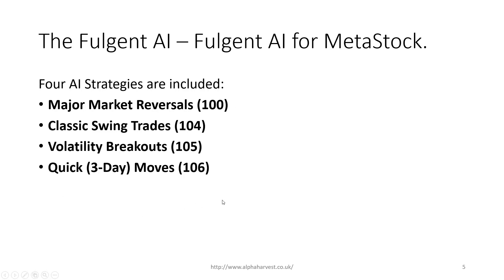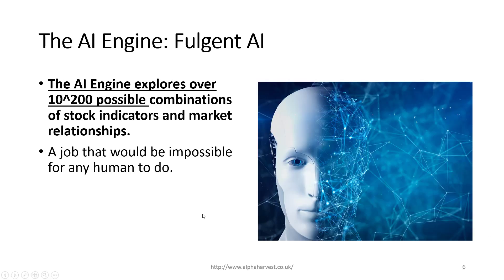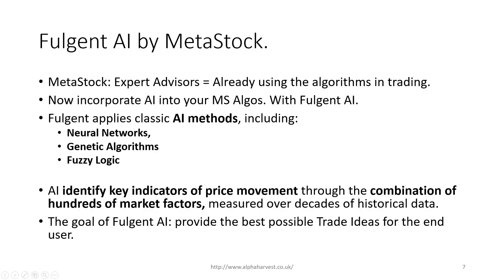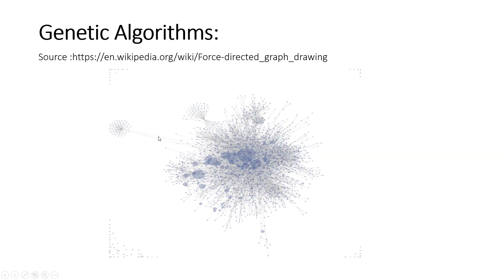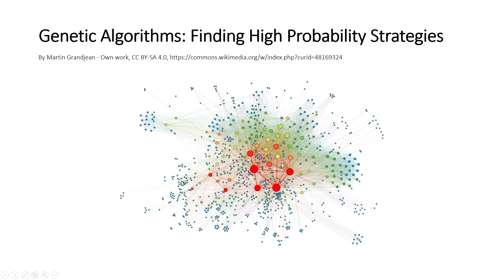We're going to use these four AI-generated engines to screen the South African market. The AI does 10 to the power of 200 different combinations of technical indicators, using genetic algorithms in its analysis — it takes all available technical indicators, changes all available settings, and tests and retests everything. It literally looks at everything possible in the market and then develops high probability trading strategies. We're only looking for things with 65% plus accuracy. The AI identifies market and stock relationships you might not find using normal back-testing with technical analysis.